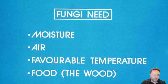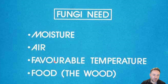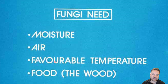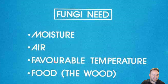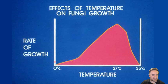In order for fungi to grow and our wood to rot, they need all of these things. The food is a given — that's the wood itself. The fungus needs moisture, it needs access to oxygen in the air, and it requires a favorable temperature. If it's too hot or too cold, the fungus can't grow and the wood can't rot. It's kind of like the fire triangle — you need moisture, you need access to air, and you need a favorable temperature. Otherwise, the wood is essentially safe.